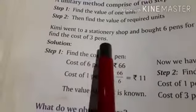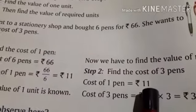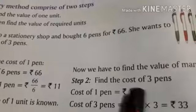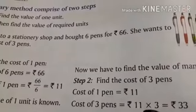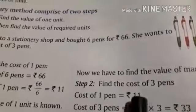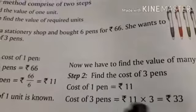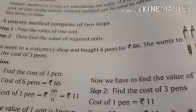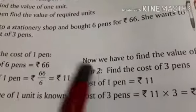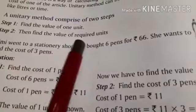Now suppose you have to find the cost of 3 pens — it will be 3 times, so multiply with 3. That is 11 into 3 is equal to Rs. 33. In the same way, if you have to find the cost of 4 pens, it will be Rs. 11 into 4, which is equal to Rs. 44. So first find the cost of 1 pen, then find the required number of units.